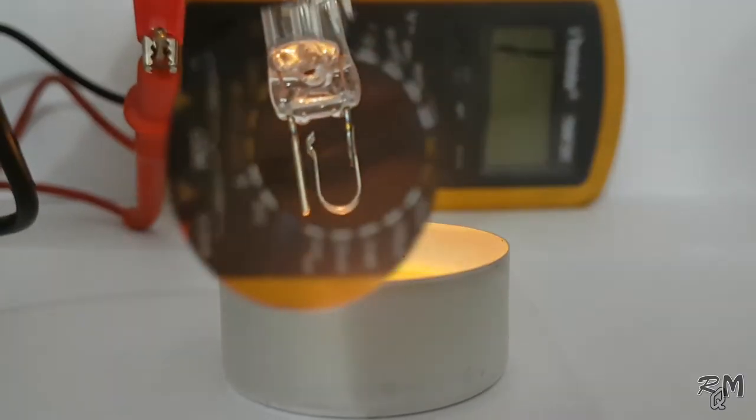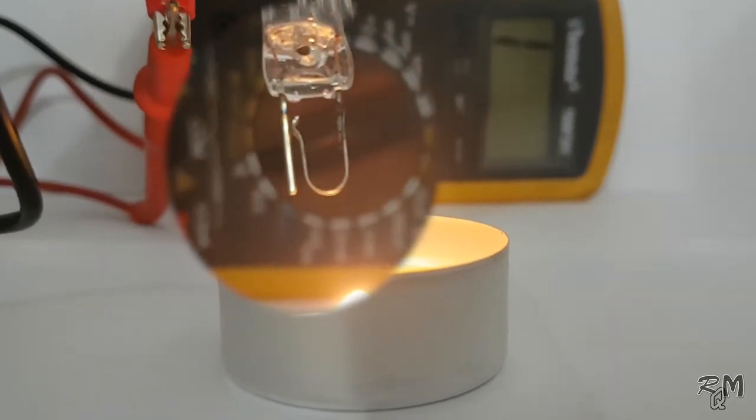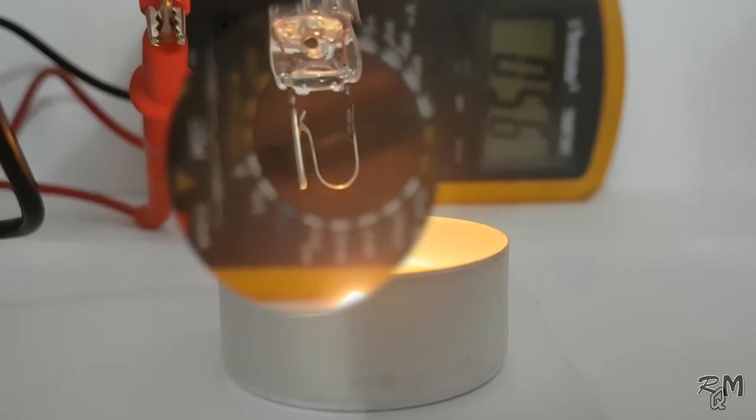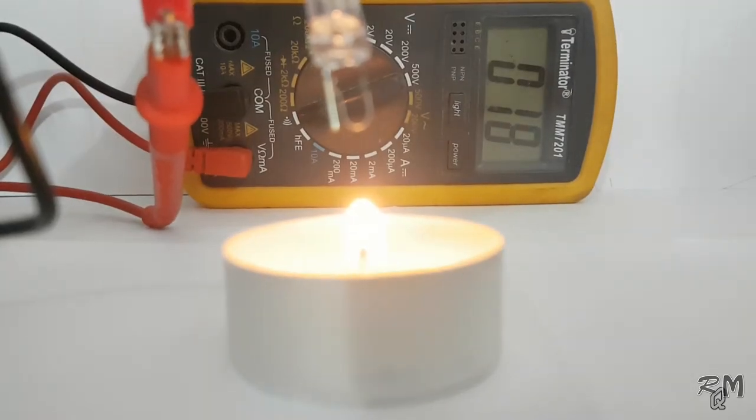Actually what's happening here: when you bring the bi-metallic switch near to the flame, it will increase the temperature of the bi-metallic strip, due to which it tries to straighten up its shape and get contact with the second electrode. This will create a closed circuit.